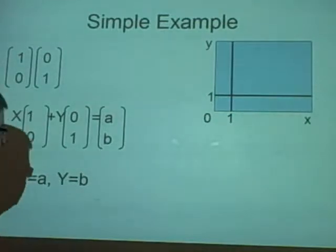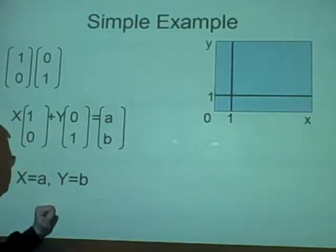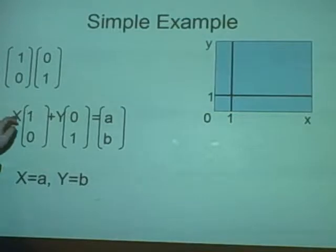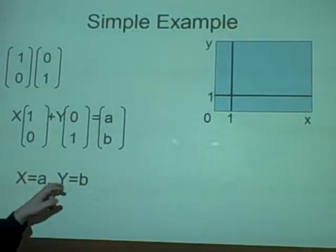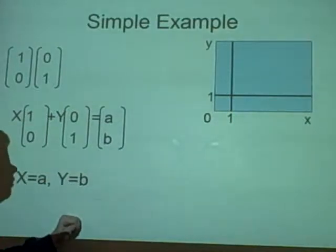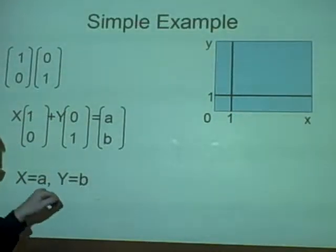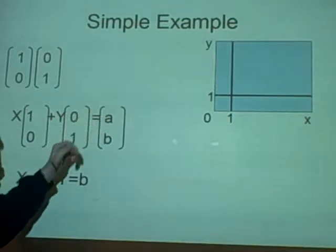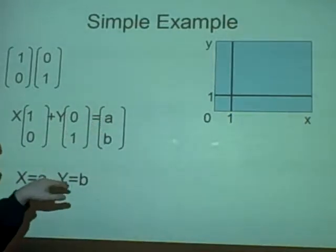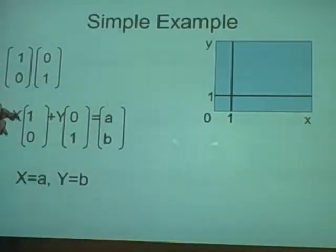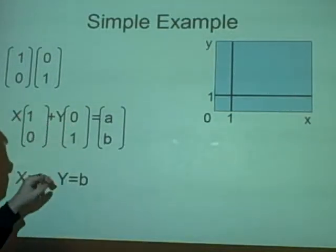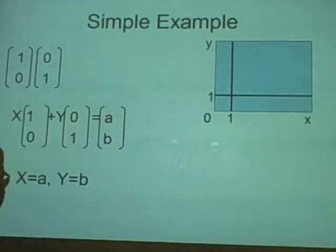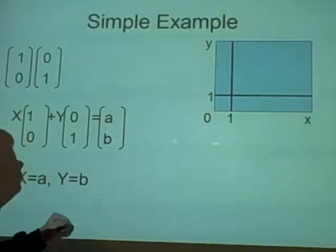Now if you just solve this, this is obviously a very easy example. We have x plus zero equals a, so x is a and y is b. Say we wanted the point [2,3], we say x is two and y is three. So we times that by two, which gives us [2,0] plus three times that, which is [0,3], which gives us [2,3]. And that's just a simple explanation of spanning.